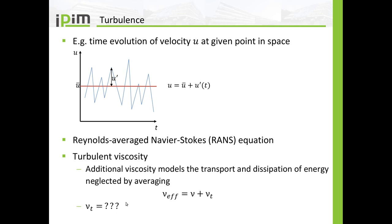What we use in simulations is the so-called turbulent viscosity, which is a model viscosity. It has nothing to do with the physical viscosity — it models the transport and dissipation of energy neglected by averaging. We have to model this with an additional viscosity. Instead of using the physical viscosity in the momentum equations, we use an effective viscosity, which is the sum of the physical viscosity and a turbulent viscosity. The difference between different models is exactly this calculation of the turbulent viscosity.